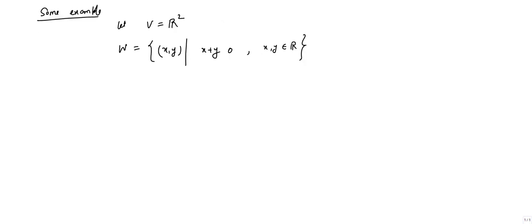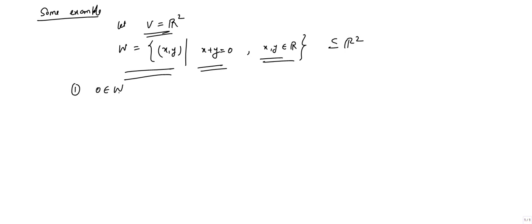Now let us do some examples. Let the given vector space be R² over R, and we have a given subset W = {(x, y) | x + y = 0, x and y are elements of R}. So W is a subset of R² and we need to check whether W is a subspace or not. Let us check the first criteria: 0 should belong to W. If we take x = 0 and y = 0, then 0 plus 0 equals 0, so (0, 0) belongs to W — meaning the zero element of R² also belongs to W.